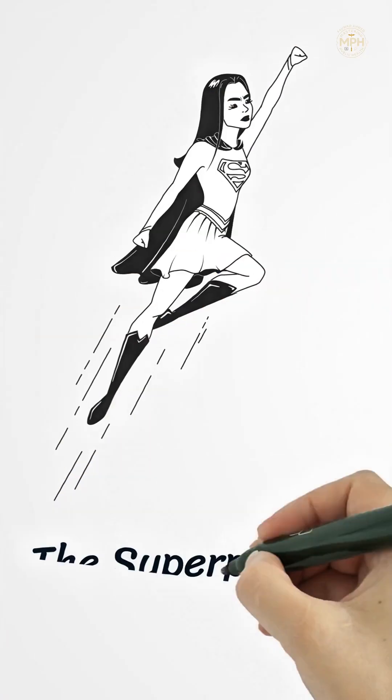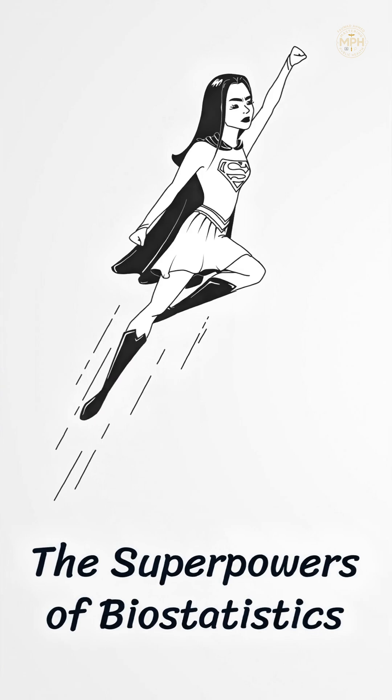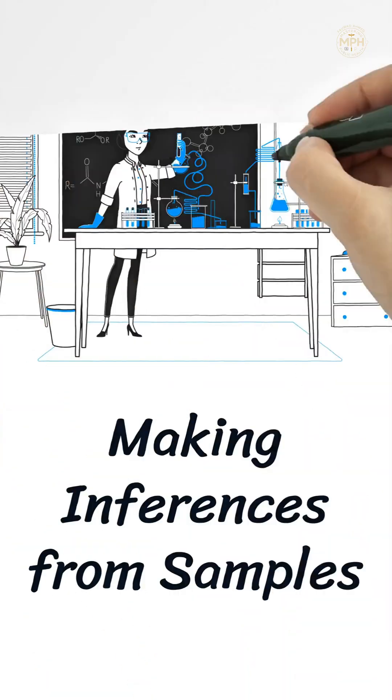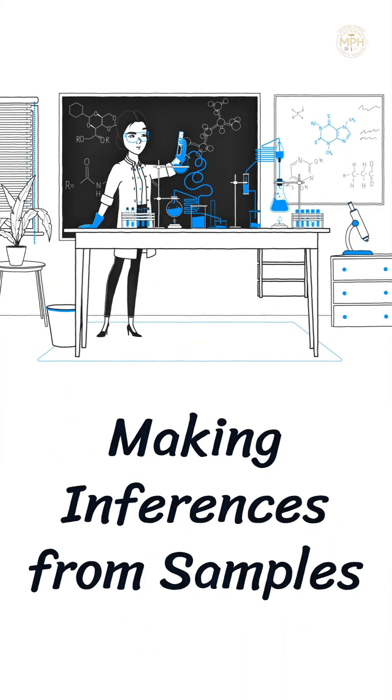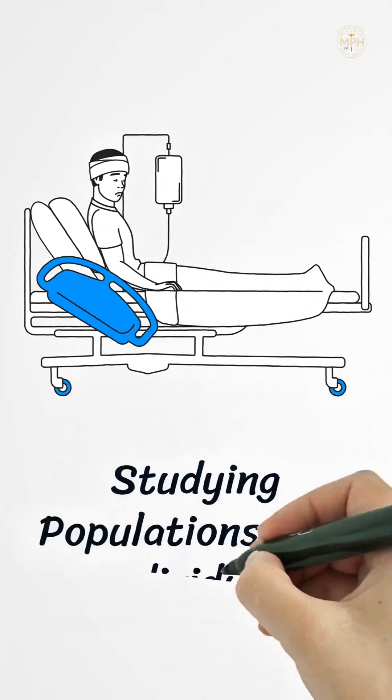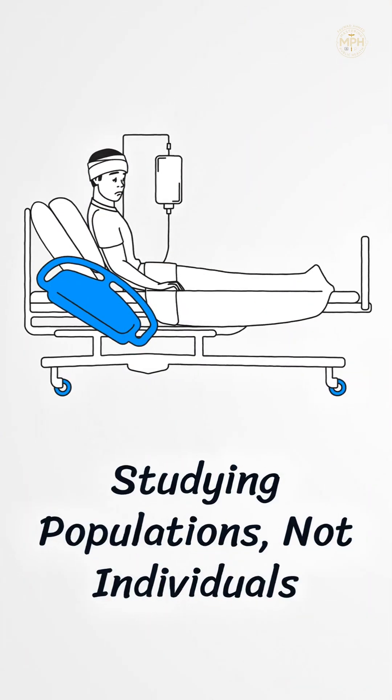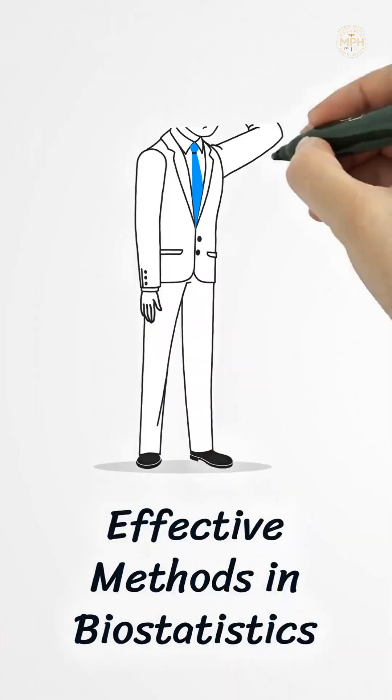One of its superpowers? Making inferences about large populations from just a small, well-designed sample. Because in public health, we can't study everyone. But with the right methods, we don't need to.